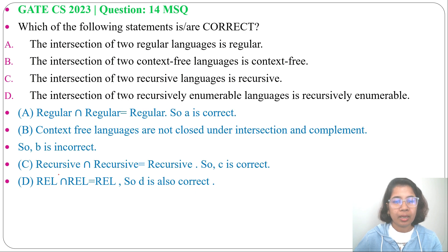Regular language, recursive language, recursively enumerable language are closed under intersection while context-free language is not closed under intersection.